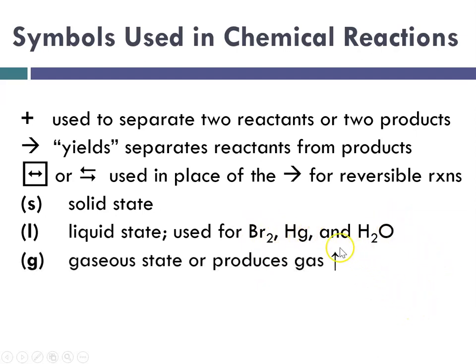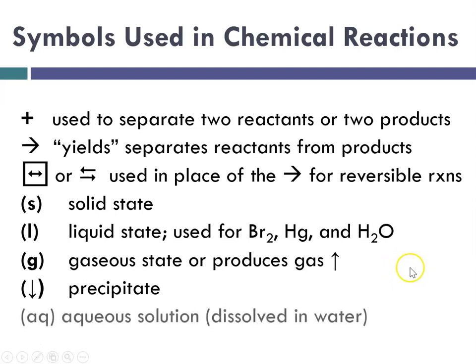G is gaseous state. Sometimes we use an upward arrow to show that a gas left, and a downward arrow is used to indicate a precipitate fell out of whatever solution we were in. And the last one on this page is aqueous, AQ, and that means in water or dissolved in water, aqua being water.